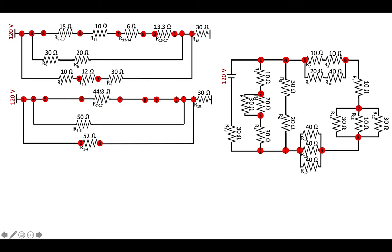And now these three are in parallel with one another so I can take the reciprocals of each of them and then take the reciprocal of that to get a single 16.2 ohm resistor.